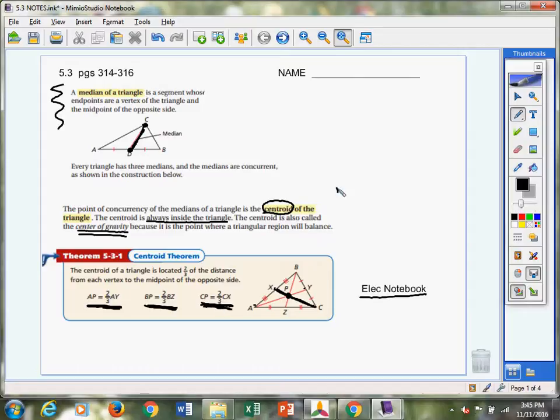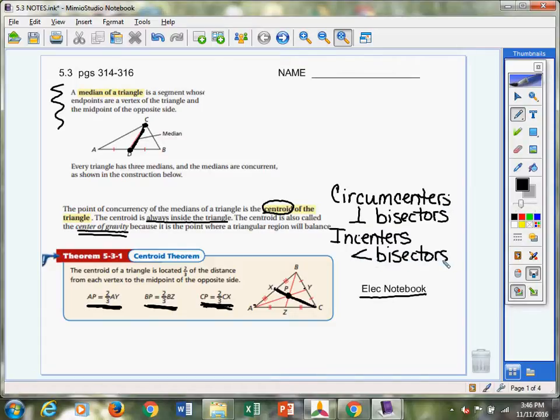So, when you roll it back and we talk about circumcenter, think about that's the intersection of your perpendicular bisectors. That's what we remember about circumcenters. And then we talked about incenters. And incenters, those are your angle bisectors. When you have all three of your angle bisectors intersect, that point of intersection is known as your incenter. And when all three of your perpendicular bisectors intersect, then that forms a point called the circumcenter.